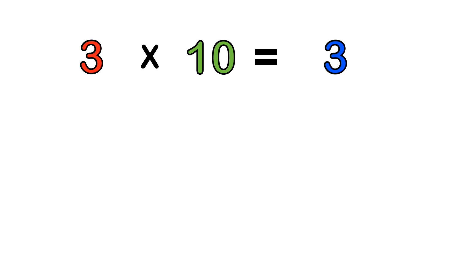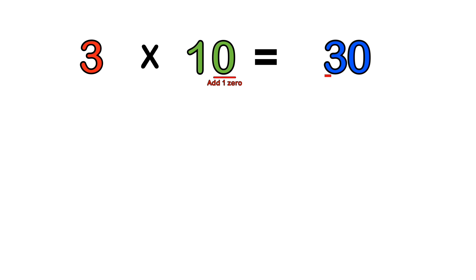Then step two: count how many zeros we have. Since we have one zero, we just add one zero into the answer. So the answer is 30 — 3 times 10 equals 30.